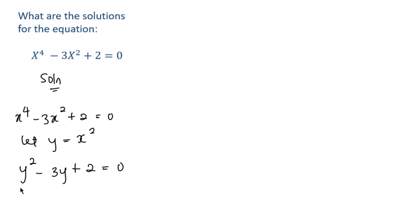The next thing we can do is apply factorization. We're going to have y squared minus 2y minus y plus 2 equals 0, because minus 2y minus y gives us minus 3y.